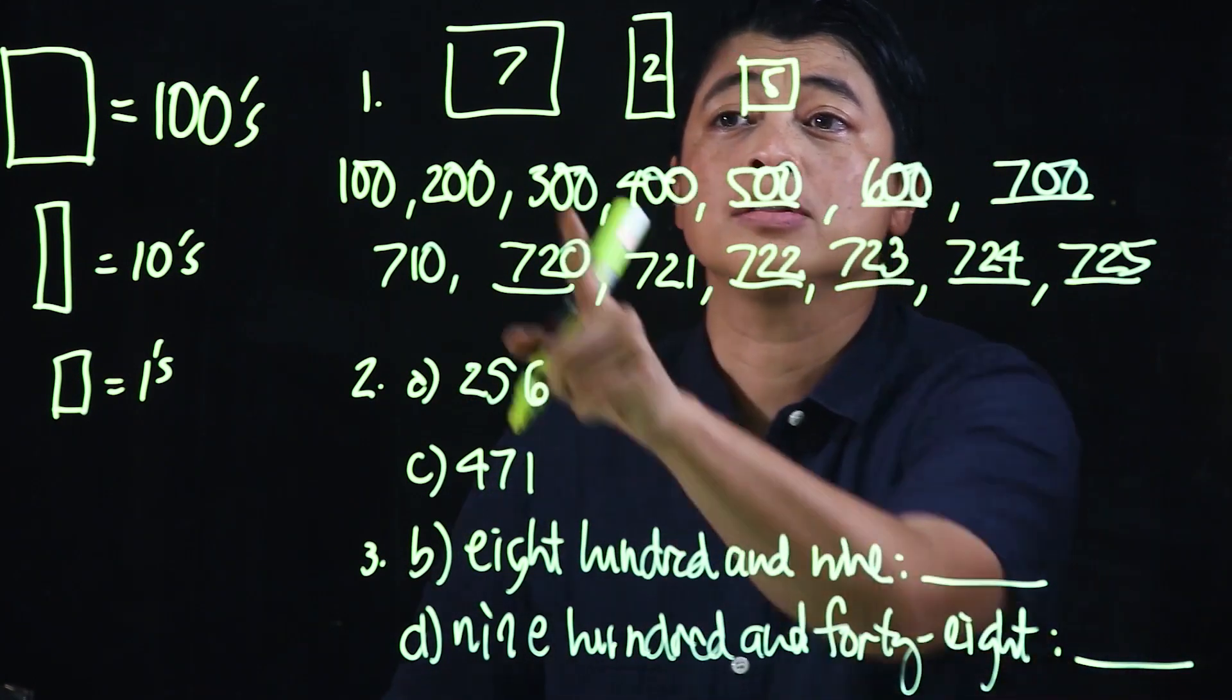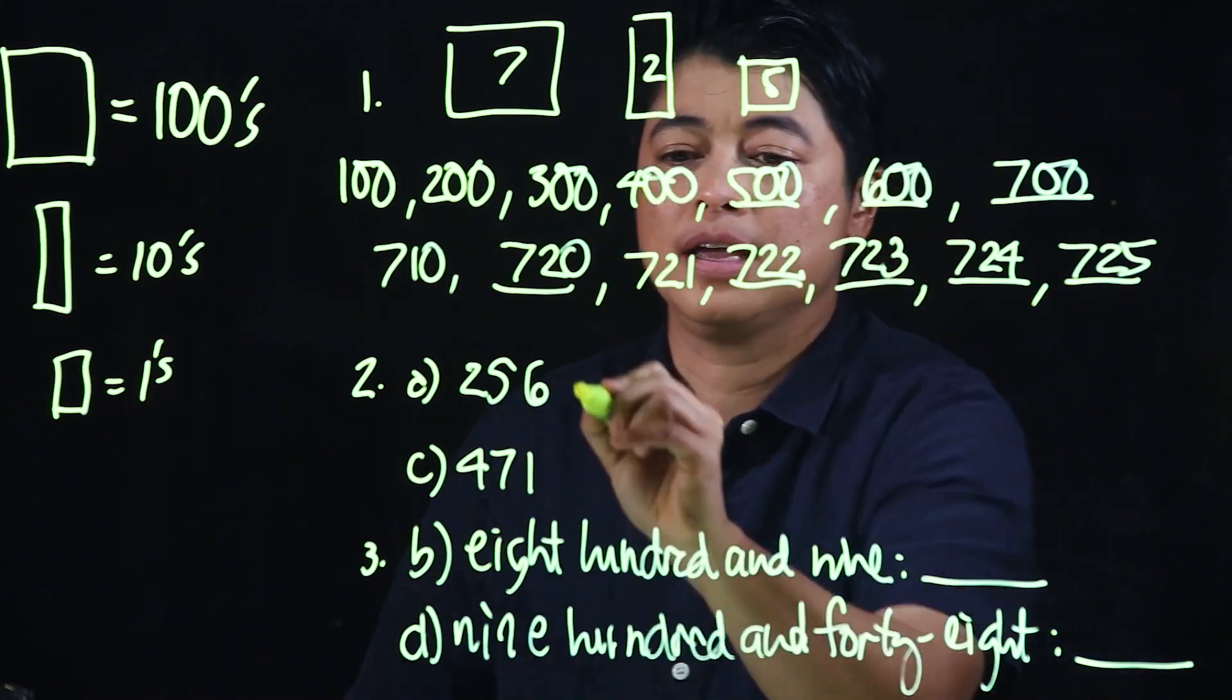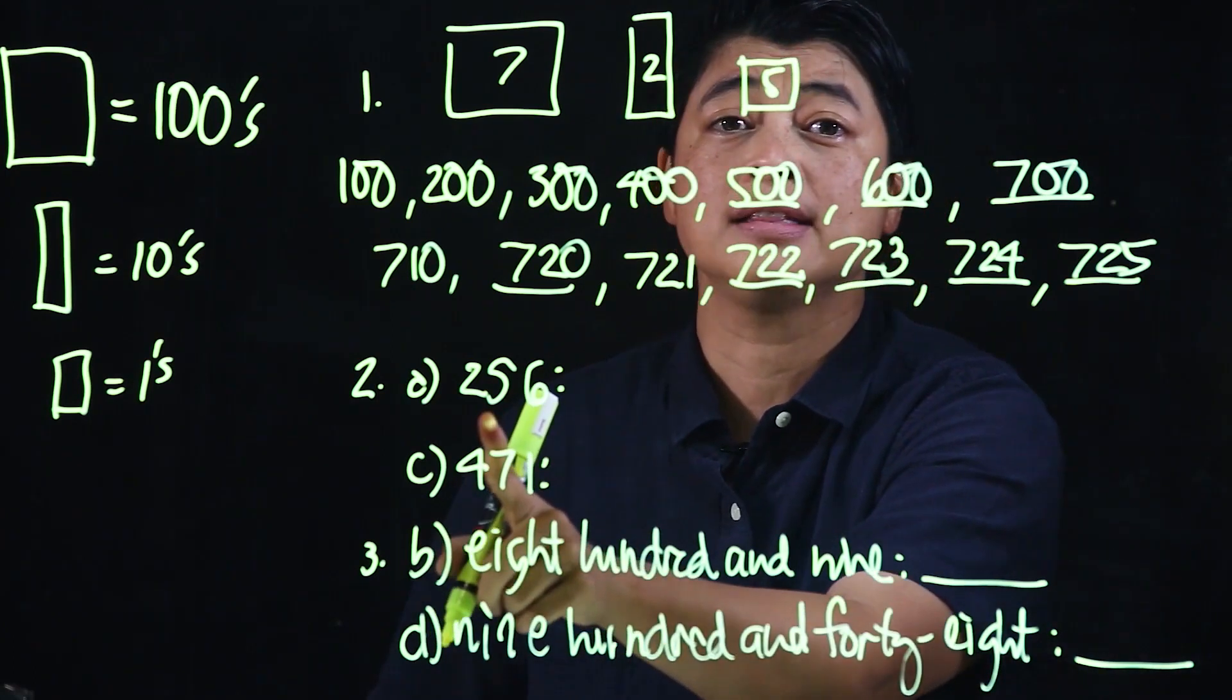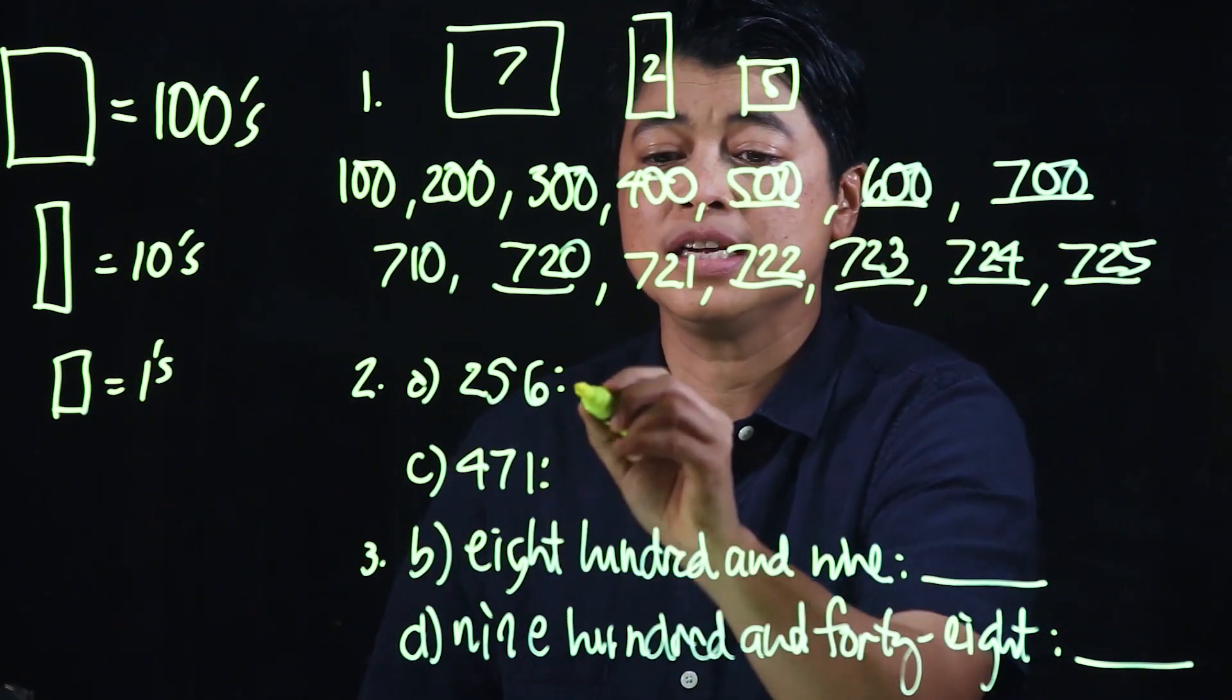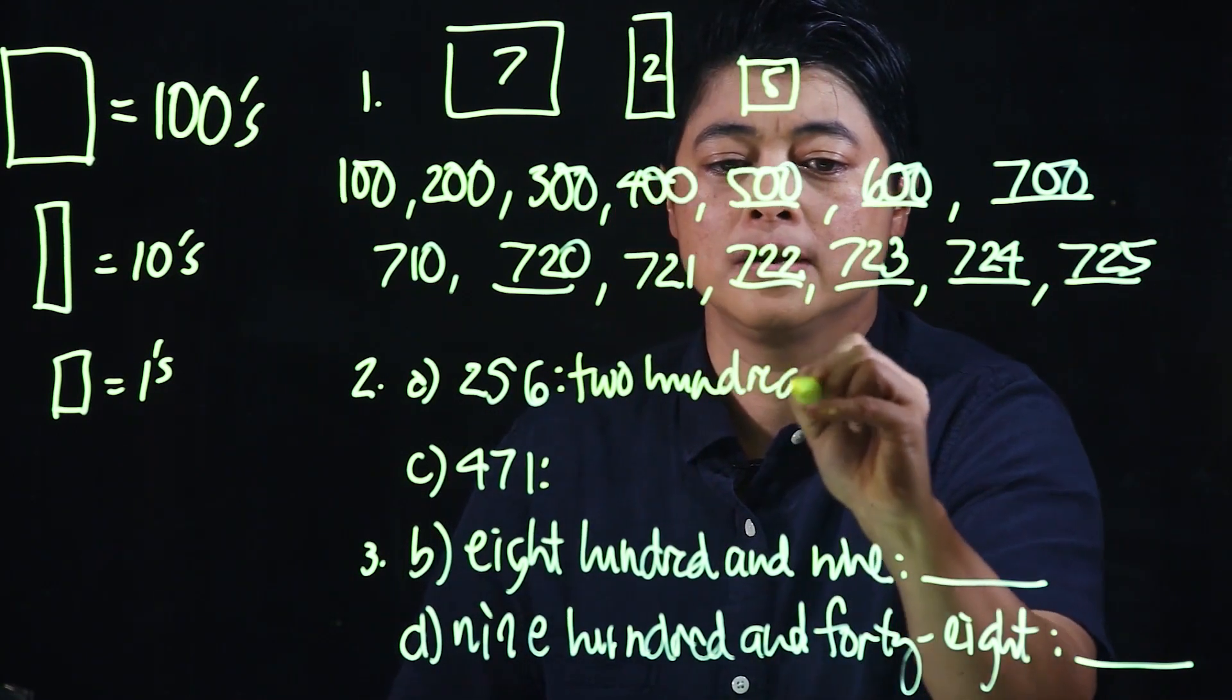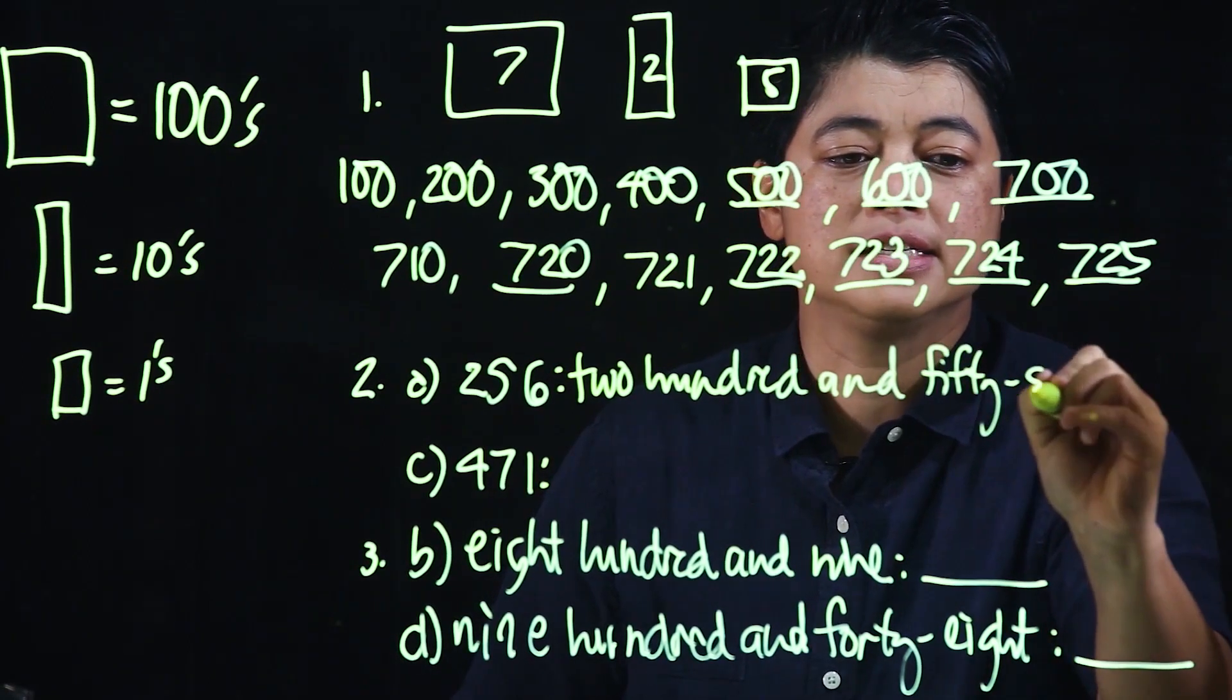So again, the kids need to be able to skip count in hundreds, in tens, and in ones. The kids are also expected to be able to write in words. So this in words is 256.